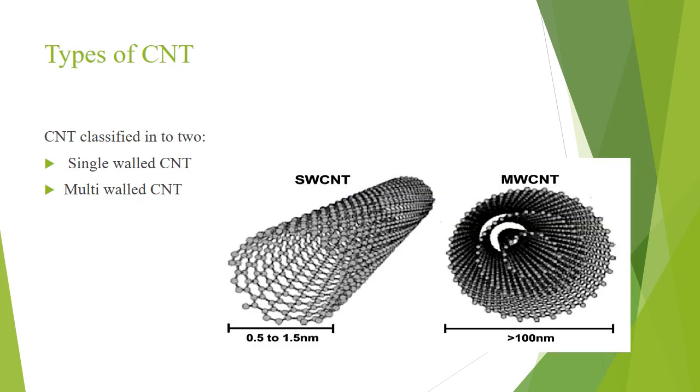So there are two types of carbon nanotubes. One is single-walled carbon nanotube and another one is multi-walled CNT. The single-walled carbon nanotube is around 0.5 to 1.5 nanometer diameter. In case of multi-walled, the diameter is more than 1 nanometer.